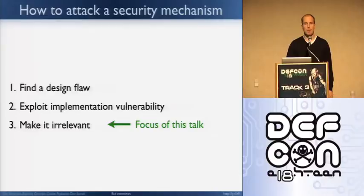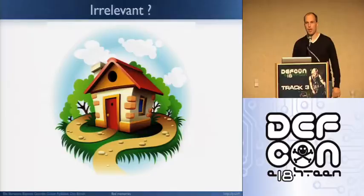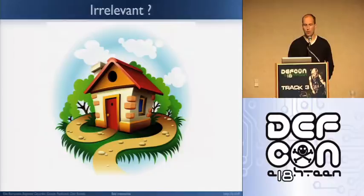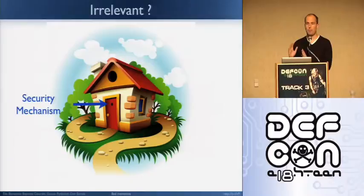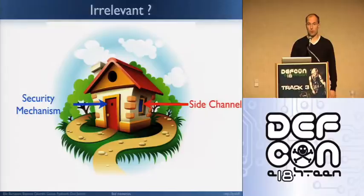So what do we mean by irrelevant? Bear with me for a second. Let's assume you have a nice house in Wonderland and you want to prevent people from breaking into it. The way you do that is with a security mechanism — a door. The bigger the door, the more secure you are. But a clever attacker might try what we call a side channel: breaking through the windows or through the roof. That's what we call side channel.